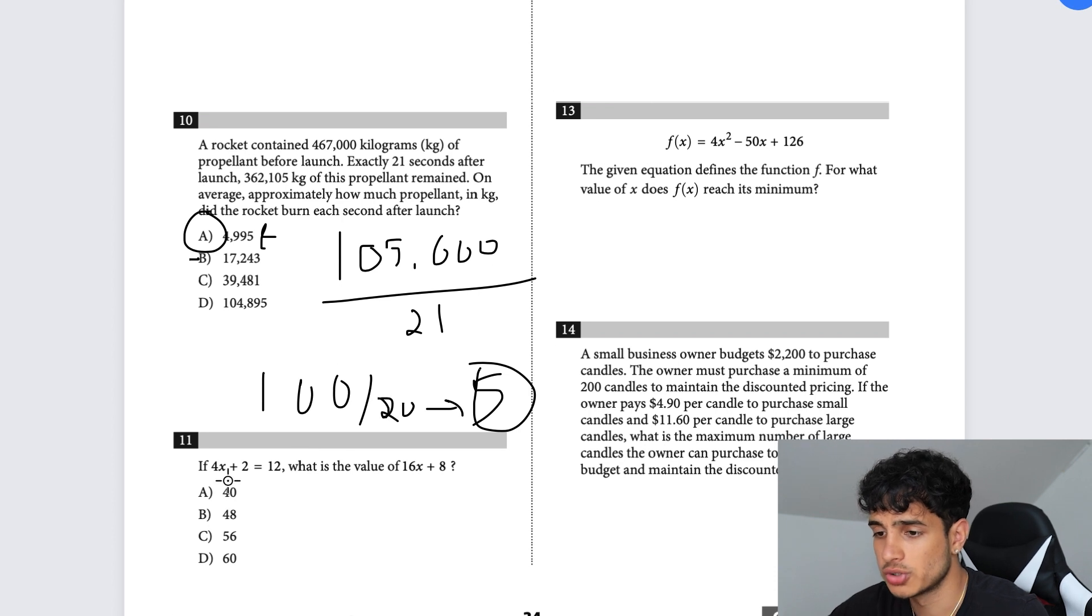If 4X plus 2 equals 12, what is the value of 16X plus 8? All you have to do is multiply the entire thing by 4. When you're asked for a quantity, you want your last line of math to be 16X plus A equals your answer. Multiply by 4: 16X plus 8 equals 48.